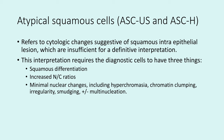Atypical squamous cells refers to cytologic changes which are insufficient for definitive interpretation. It requires diagnostic cells to have three things: squamous differentiation, increased nuclear-to-cytoplasmic (NC) ratios, and minimal nuclear changes including hyperchromasia, chromatin clumping, irregularity, smudging, and sometimes multinucleation.